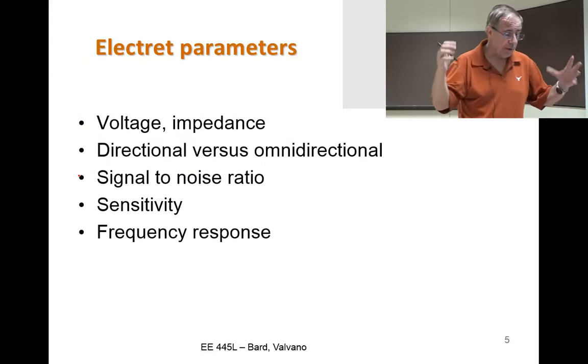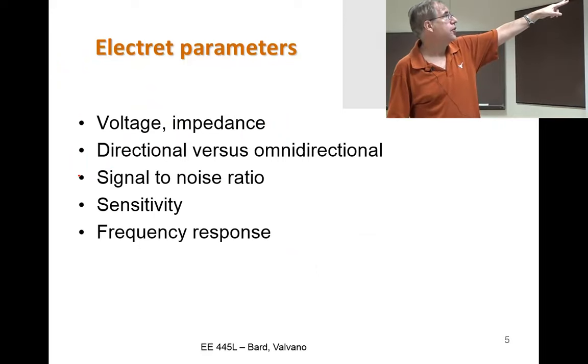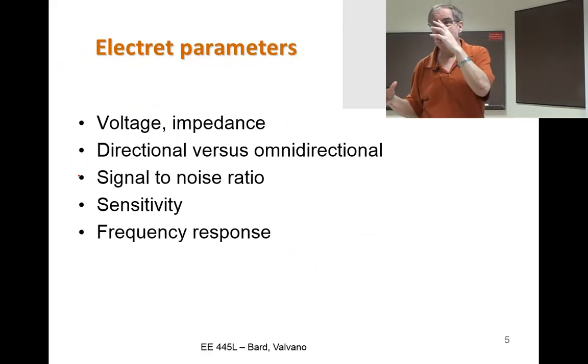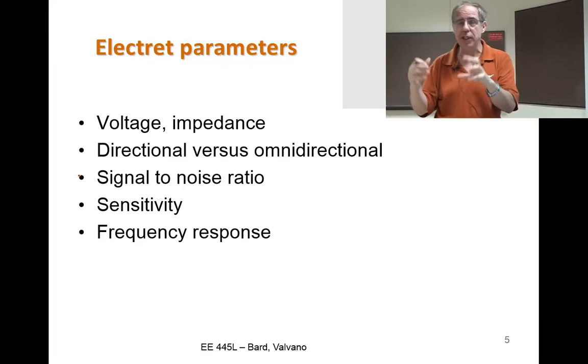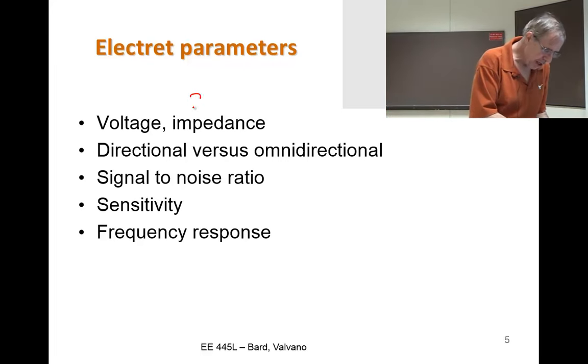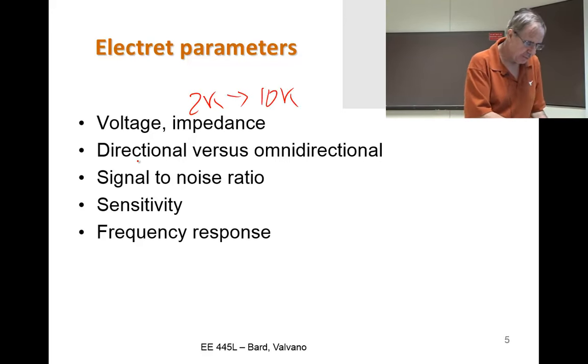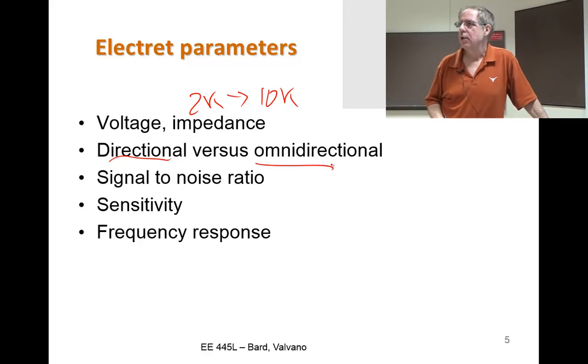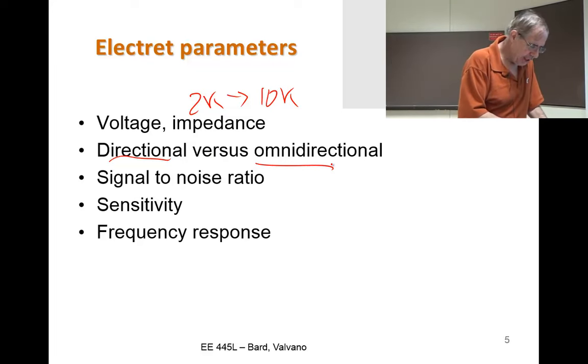All right. So in summary about the electret, get the voltage right. The impedance is what they recommend for that resistor. For the ones in my office, it's a 2K. But as I said, you might experiment with a larger value. You can either get a directional or an omnidirectional. I think all the ones in my office are omnidirectional.